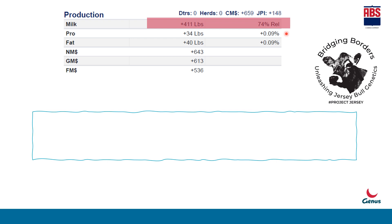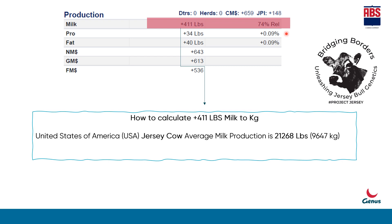To convert 411 lbs into kilograms, you should first know the average value. The average Jersey cow milk production is 21,268 pounds as per United States of America standards, which we use for calculation. Converting that, 21,268 lbs is equivalent to 9,647 kilograms. So in one lactation, the average USA Jersey cow gives 9,647 kg. In the pedigree sheet it is written plus 411 lbs — what exactly does this mean?